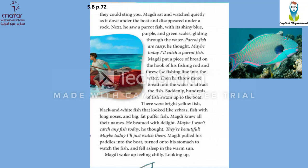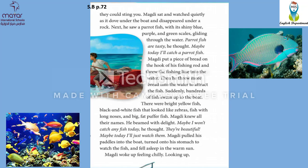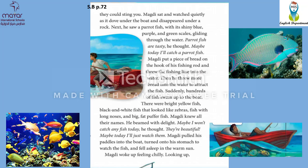He wants to fish. Then he threw more bread into the water — why? To attract the fish. Suddenly, hundreds of fish swam up to the boat. There were bright yellow fish, black and white fish that looked like zebras, fish with long noses, and big fat puffer fish. Majdi knew all their names. He beamed with delight — he smiled with delight. 'Maybe I won't catch any fish today,' he thought. 'They are beautiful.' He was so happy he did not even think of catching any. Maybe today I'll just watch them. Majdi pulled his paddles into the boat, turned onto his stomach to watch the fish, and fell asleep in the warm sun.